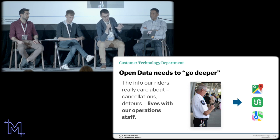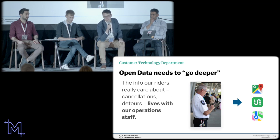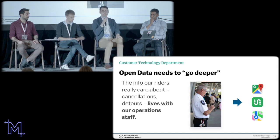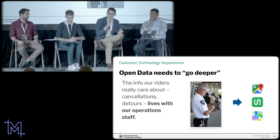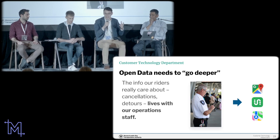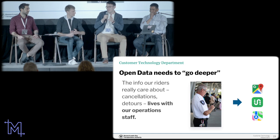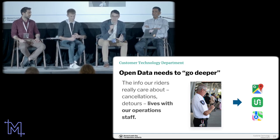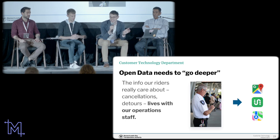When it comes to open transit data, we need to go deeper and do more. The data we publish at the MBTA has been fundamentally similar since GTFS real-time was first published in 2011. But the information riders care about most — things like cancellations and detours — is really hard to create, because when we make on-the-fly service adjustments, like detouring a bus because a manhole exploded, those interventions live in the heads of our dispatchers and field supervisors. The challenge is: how do we get that information out of their heads and into the hands of our transit riders?